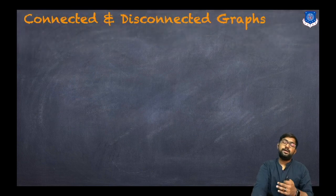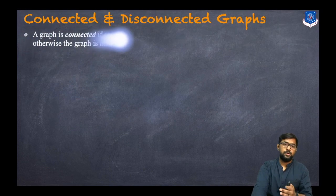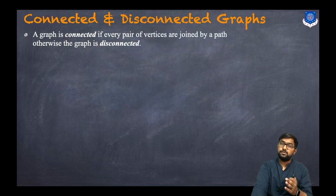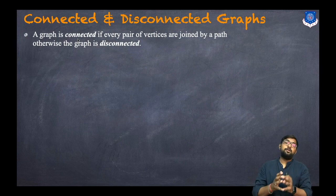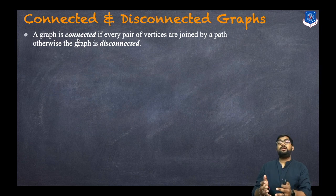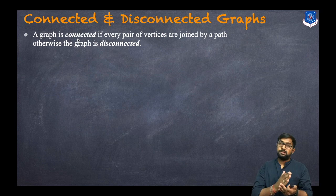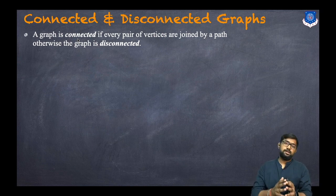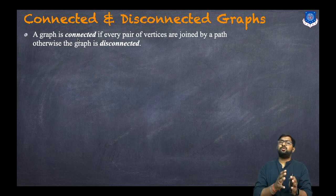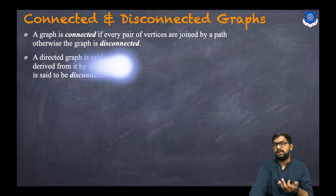Now let us understand what is a connected graph and a disconnected graph. A graph is said to be connected if every pair of vertices are joined by a path. Otherwise the graph is disconnected.